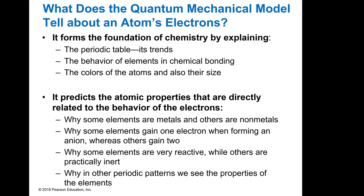The quantum mechanical model predicts atomic properties — it tells us why some elements are metals and some are not, why some gain electrons whereas others lose electrons, and some might gain one or two. The more we understand this energy and wave property, the more it tells us how to understand those trends. And that's the introduction to this section.